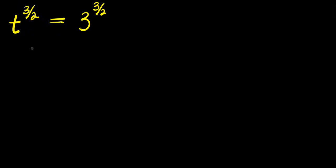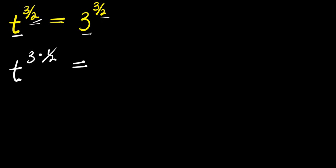Hello. How to solve this exponential problem: t to the power of three over two equals three to the power of three over two. We are solving for the value of t that satisfies this equation. Let's express three over two as a product of three times one over two, so t to the power of three times one over two equals three to the power of three times one over two.